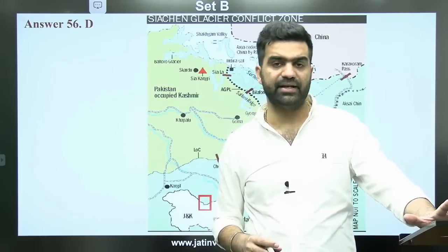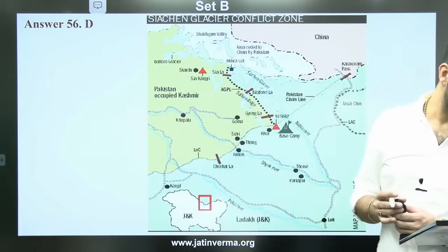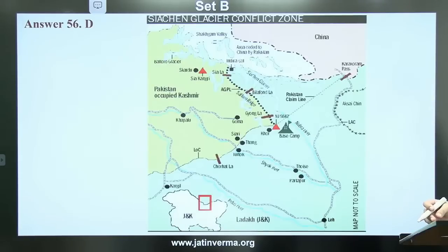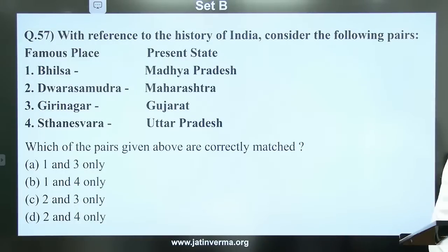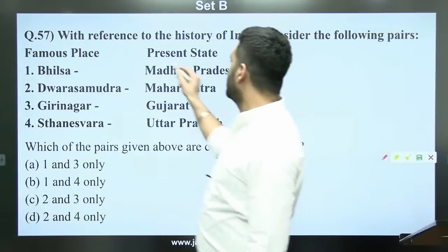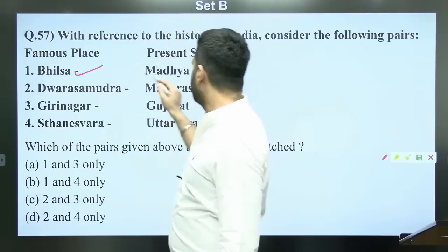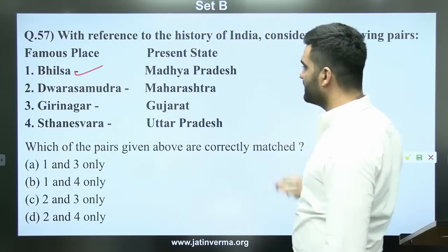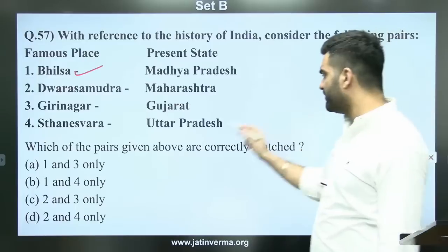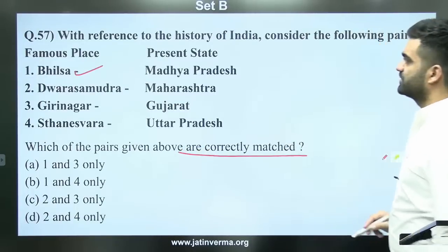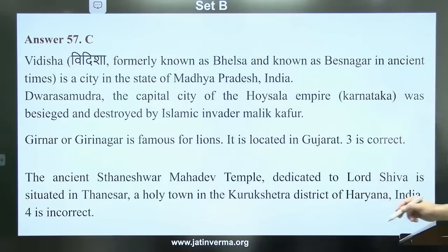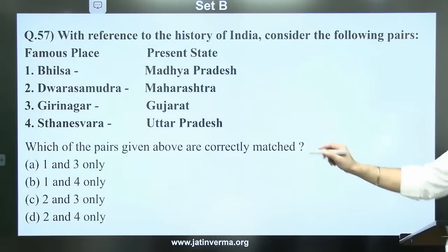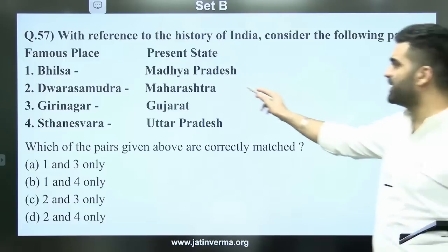Question 57: With reference to the history of India, consider the following pairs of famous places and their locations. Bhilsa is in Madhya Pradesh or not? The answer to question 57 is C — pairs 2 and 3 are correctly matched. Vidisha's answer becomes C with 2 and 3 correctly matched.